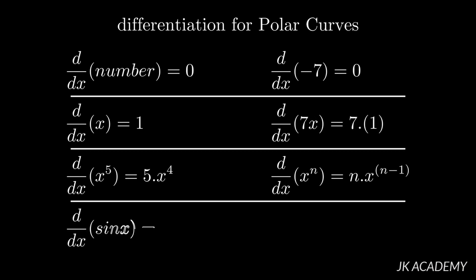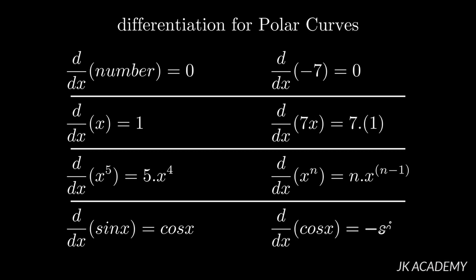d by dx of sin x is equal to cos x. d by dx of cos x is equal to minus sin x. We'll look at these in the next set of formulas.